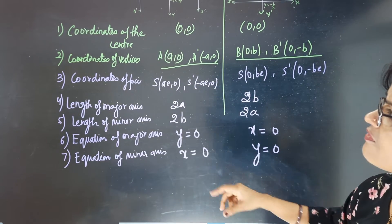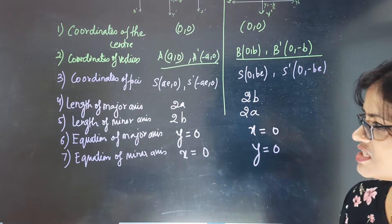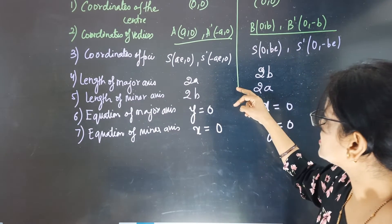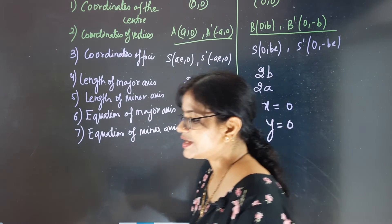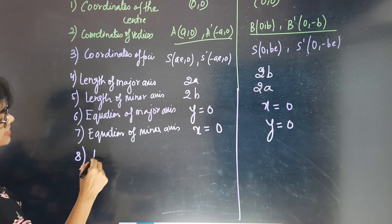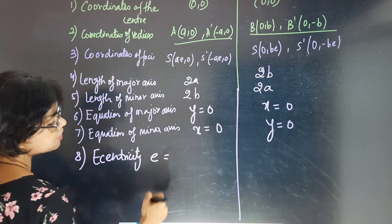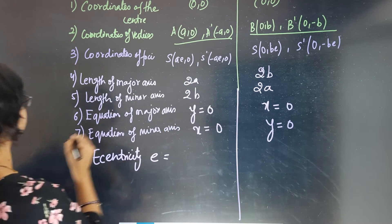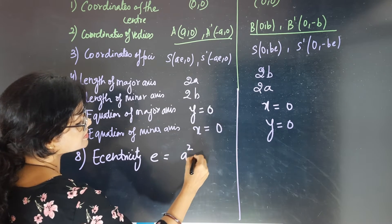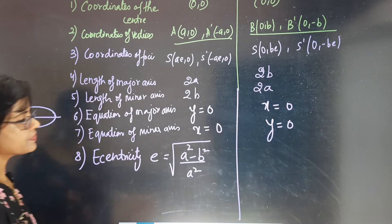We have now found: coordinates of center, vertices, foci, lengths and equations of major and minor axes. Next we find eccentricity. For the ellipse with major axis on the x-axis, eccentricity E = √(a² - b²) / a. For the ellipse with major axis on the y-axis, it is the opposite: E = √(b² - a²) / b.